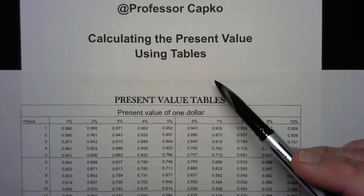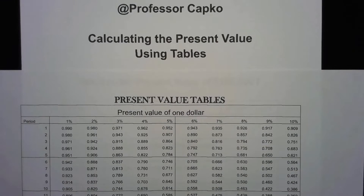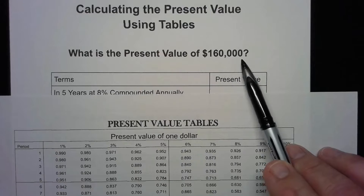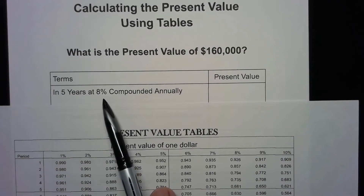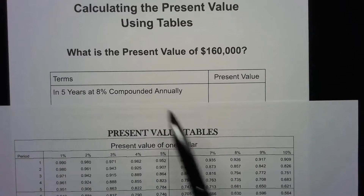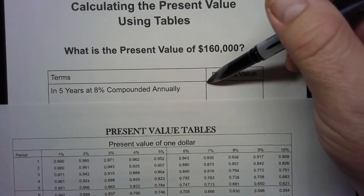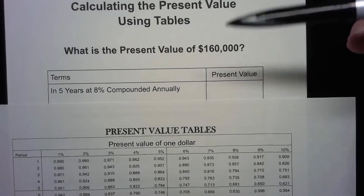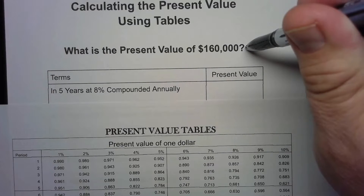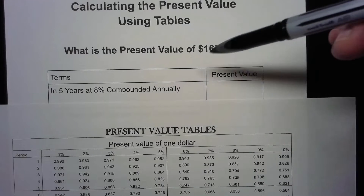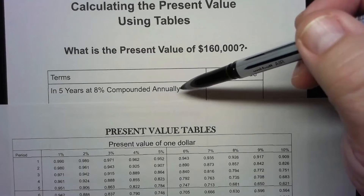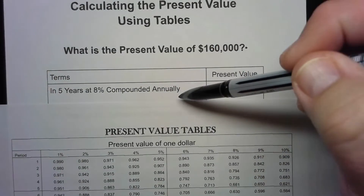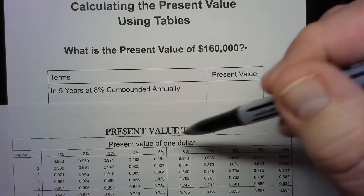Today we're going to calculate the present value of an amount of money using present value tables. The amount we're calculating is the present value of $160,000 under various terms. The first example is five years at eight percent compounded annually — meaning you put a certain amount of money to work today and in five years you receive $160,000, because it will be earning eight percent compounded annually.